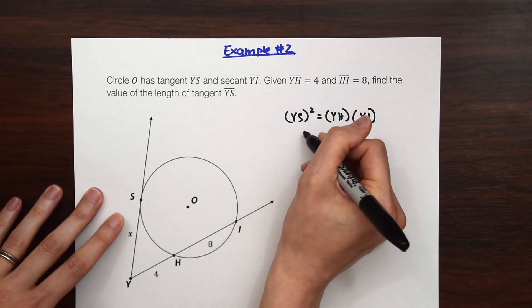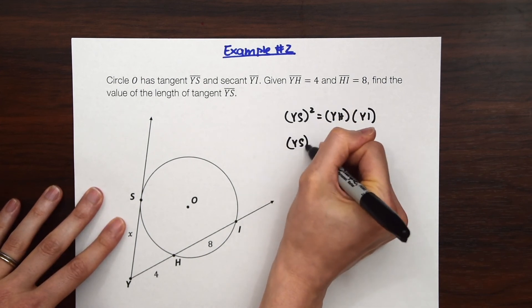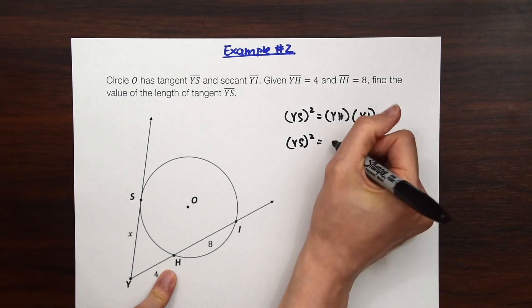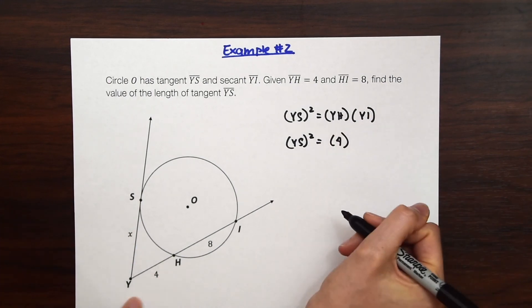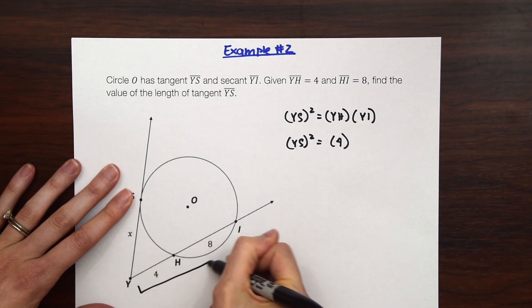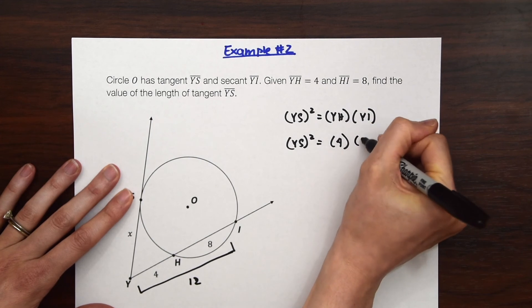So we see YS squared. We don't know what that is yet so we're going to just leave it YS squared. YH we see is 4. And then YI we just need to find by adding these two values together. So when we do that we'll get 12. 8 plus 4 is 12. So YI is 12.